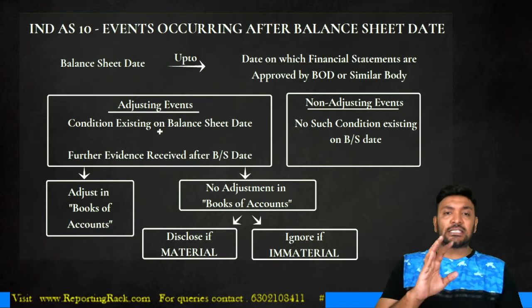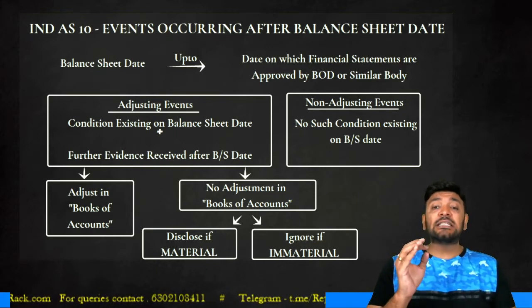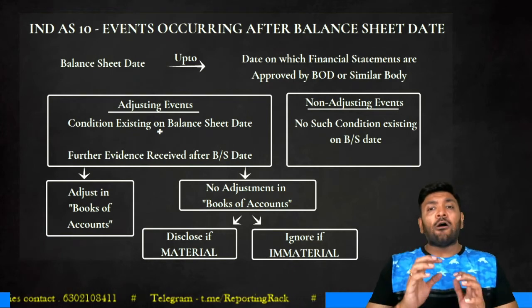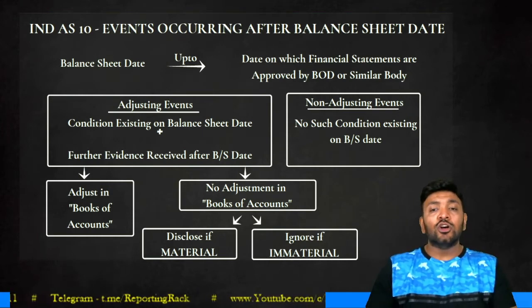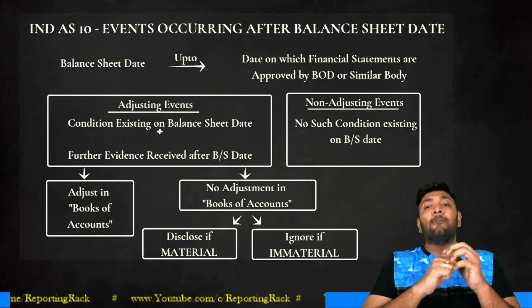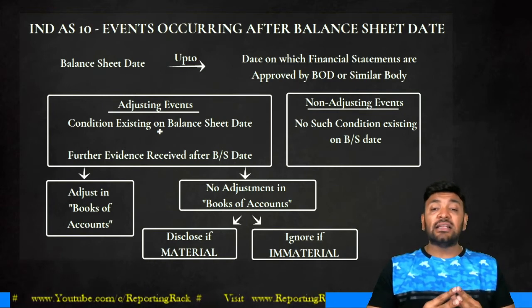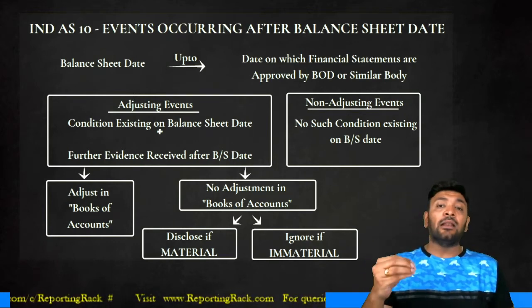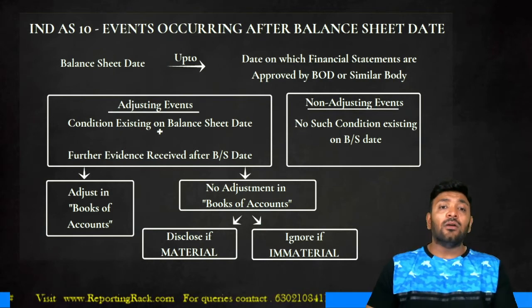For example, a fire accident occurred on 1st of March. By 31st March, the enterprise was still dealing with the aftermath. On 15th April, the enterprise filed for insolvency or a winding-up petition. The event occurred before the balance sheet date, the condition leading to insolvency was existing on the balance sheet date, but the further evidence was only received after the balance sheet date — this is an adjusting event. A non-adjusting event would be if the fire accident occurred on 10th April and the insolvency was also filed after 10th April, meaning both the event and condition exist after the balance sheet date.